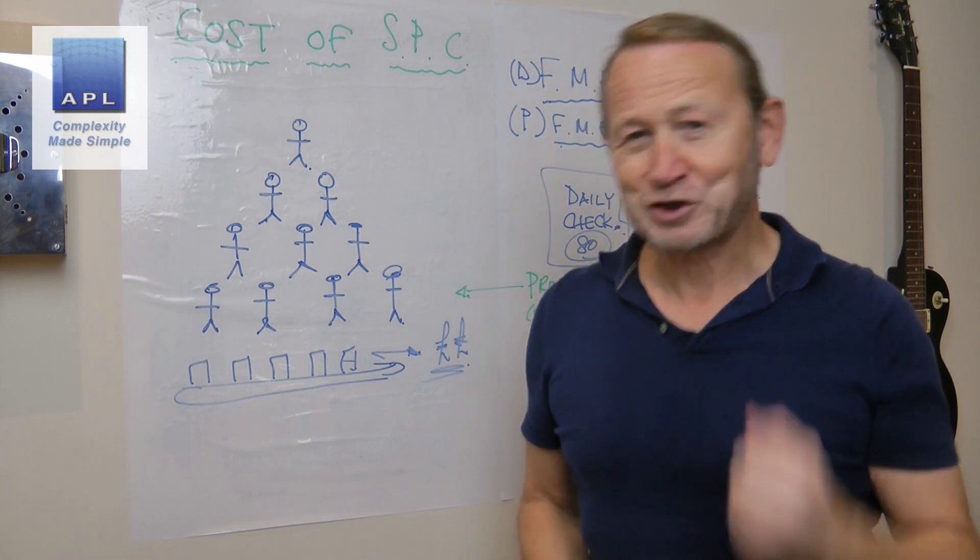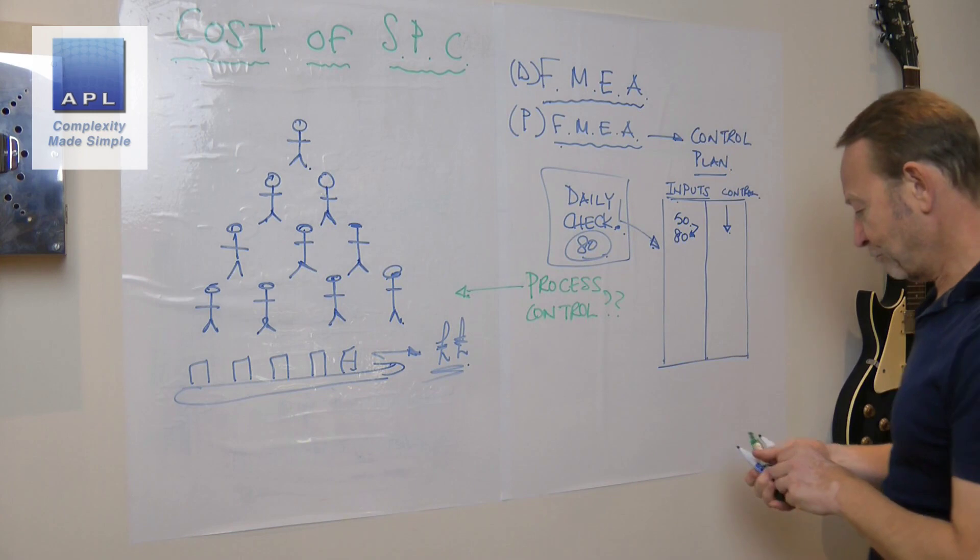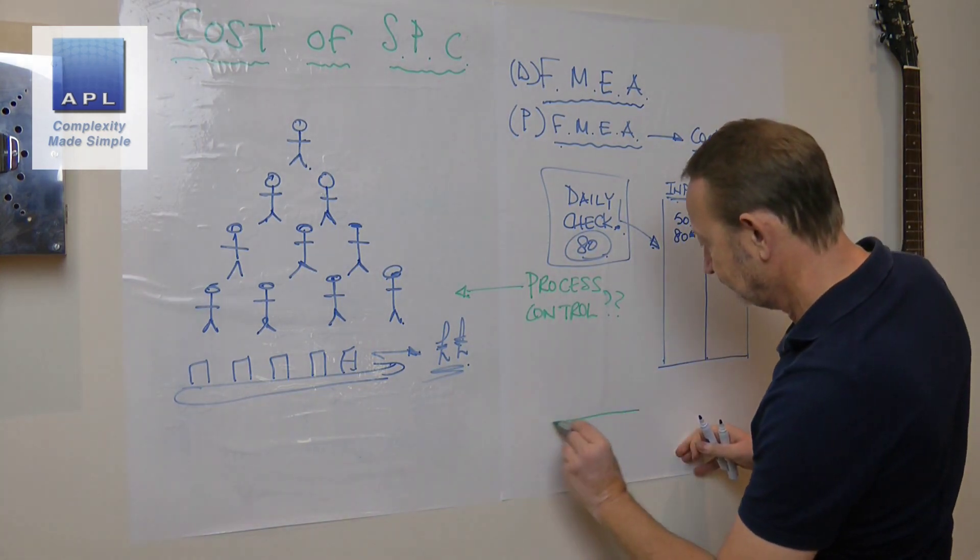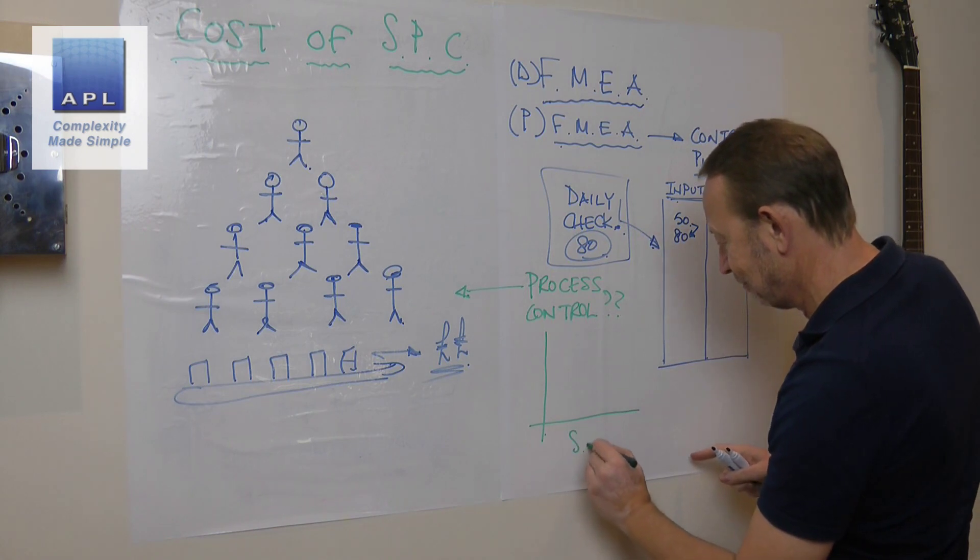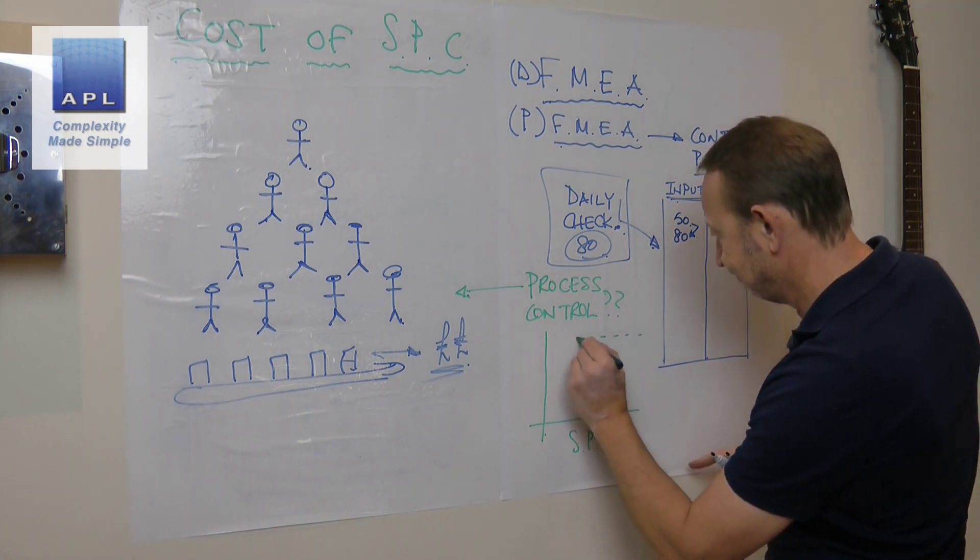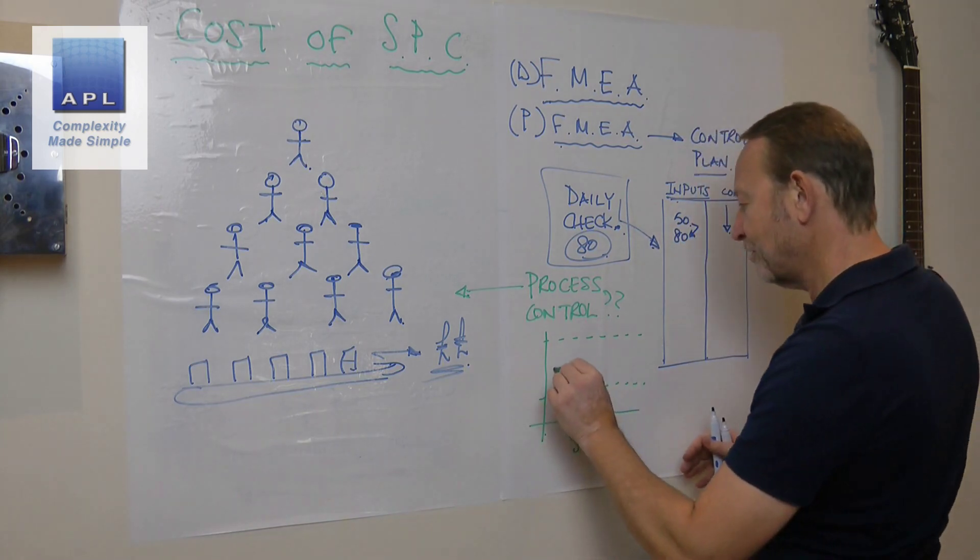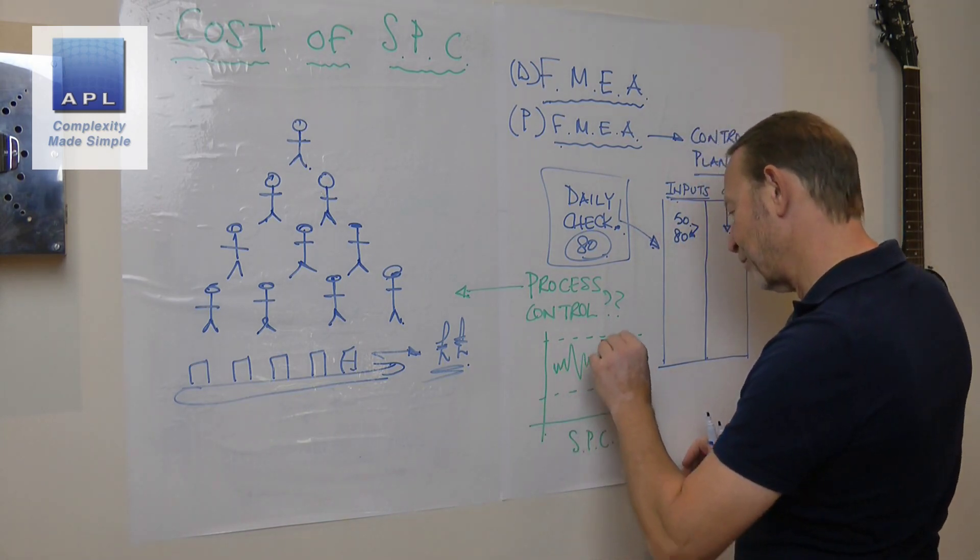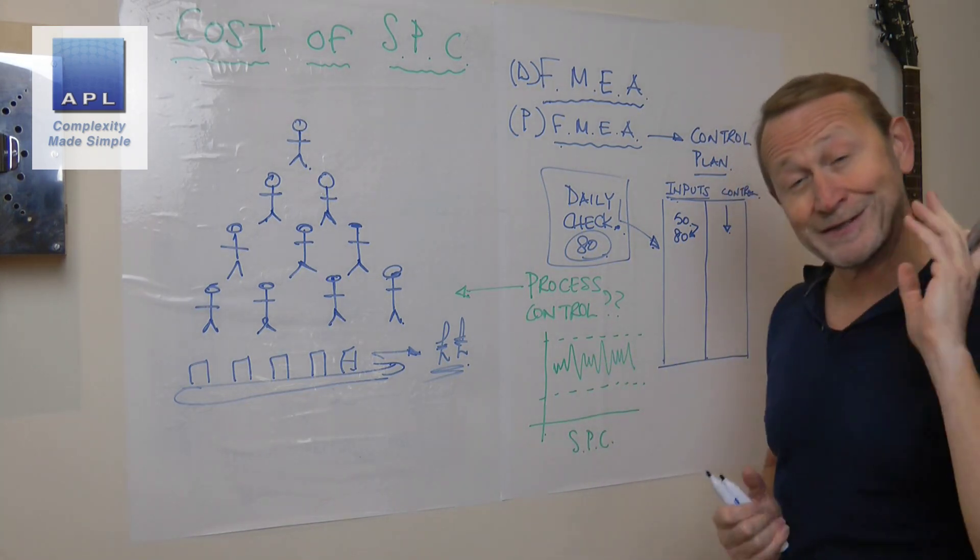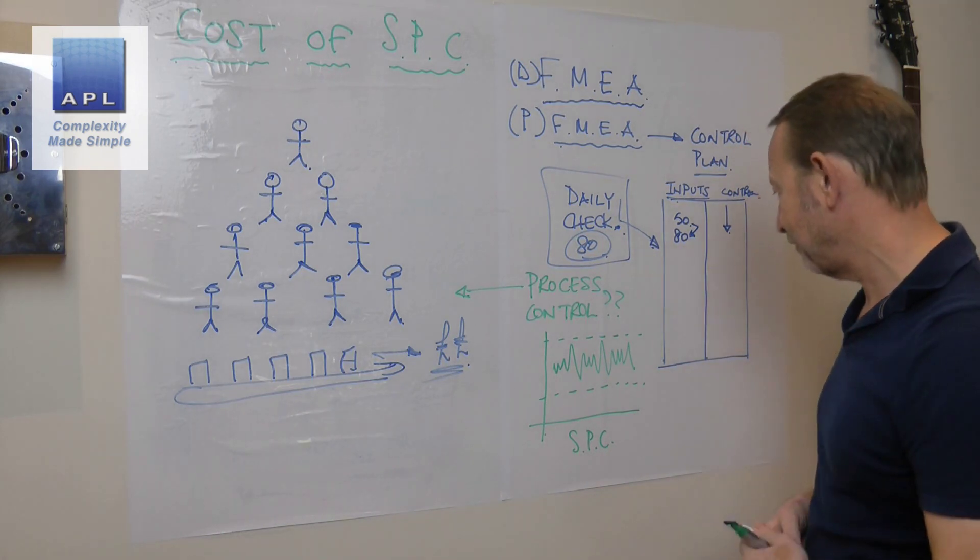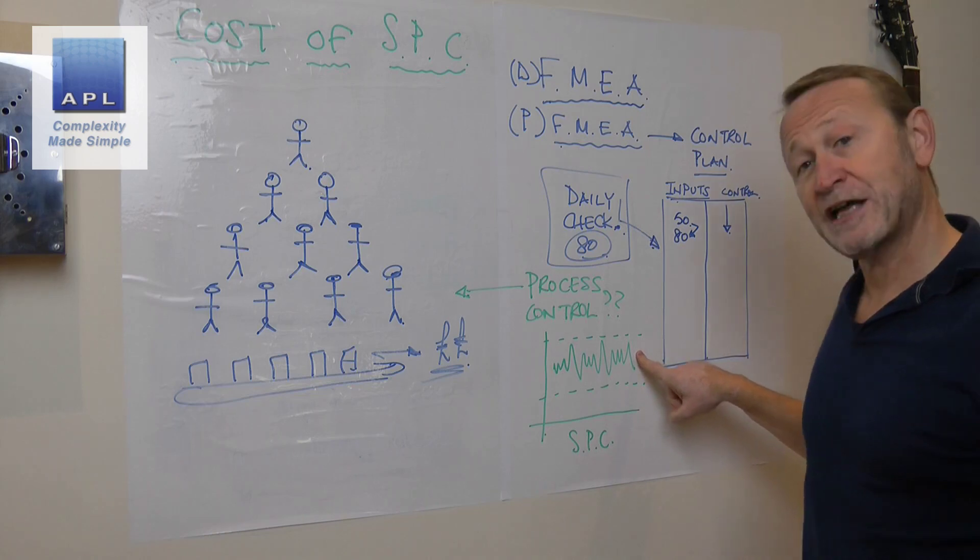Now then, how are you going to maintain daily process control? You could, if you wanted to, do a daily check on all 80, and that would work brilliantly. You would definitely have process control. But you tell me: how cost-effective is that going to be? That's method one.